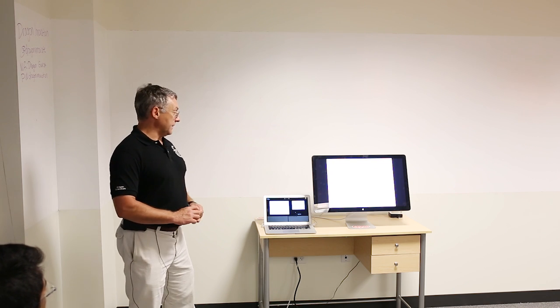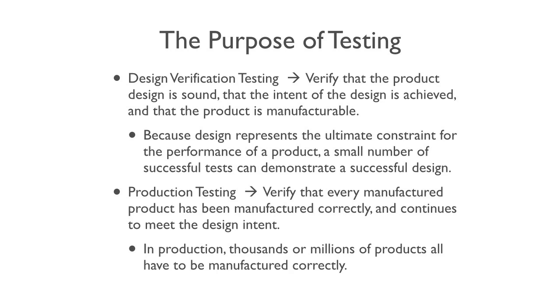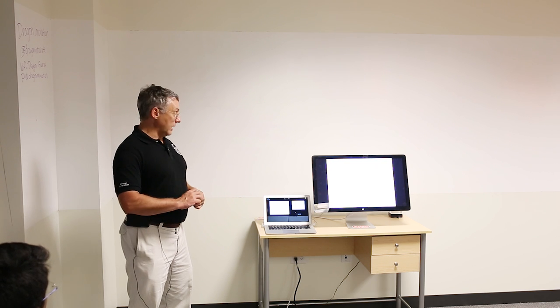There are really two kinds of testing. There's design verification testing, and then there's production testing. In design verification testing, you're actually testing the design. You're using a prototype as an embodiment of a design. Because we know that prototype can never be any better than the quality of the design, if your prototype meets the requirements, then certainly the design meets the requirements. There are some issues around manufacturability and ease of assembly that won't always come out of prototype testing.